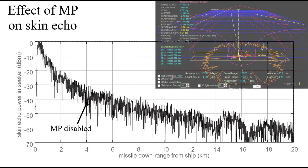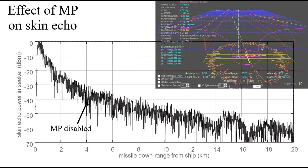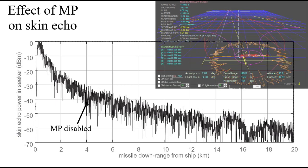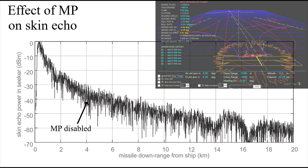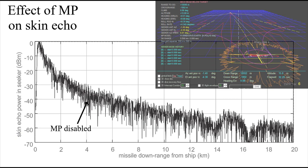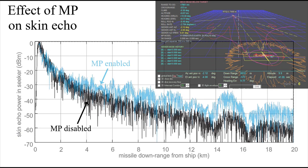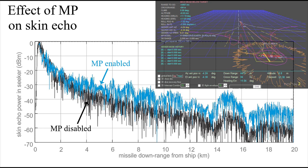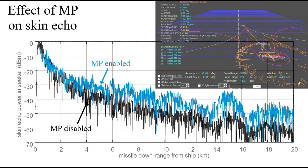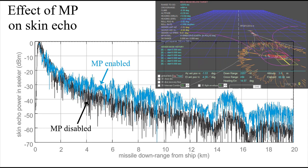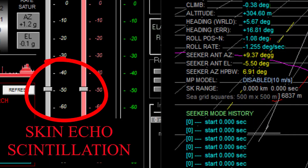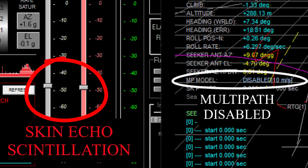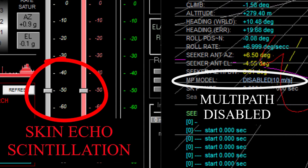Here's an example: an X-band sea skimmer missile attacking a tanker-sized ship. The ship is represented by 10 reflectors and propagation is not applied to each of the reflectors. Here's the same flyout but with propagation applied to each of the reflectors. There's a gain difference which needs to be chased down, but overall the scintillation characteristics appear effectively identical. Remember that even without multipath, the skin echo will scintillate because of the interaction of all those little reflectors.